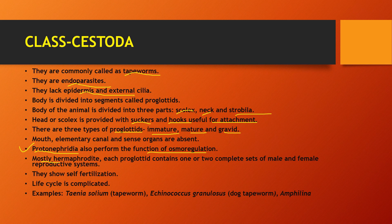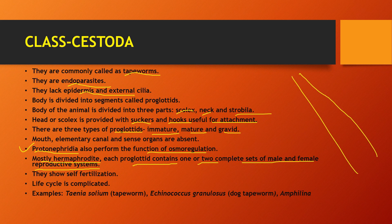They are mostly hermaphrodite. Each proglottid contains two complete sets of male and female reproductive systems since the body is divided into segments. Self-fertilization occurs. The life cycle is complicated, meaning there are many larval stages.